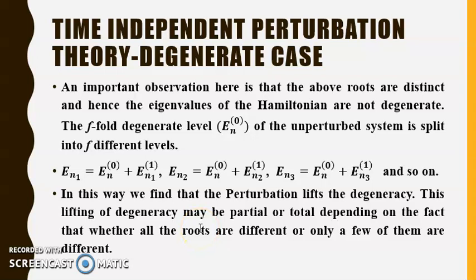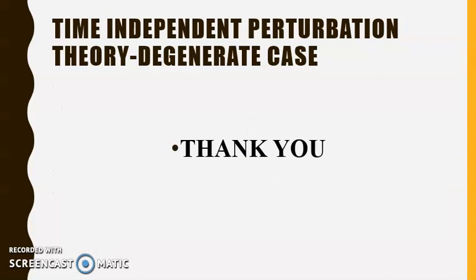This lifting of degeneracy may be partial or total depending on whether all the roots are different or only a few of them are different. To summarize, in time independent perturbation theory for degenerate cases, the perturbation lifts the degeneracy. Whether this lifting is partial or total depends on the roots obtained through the secular determinant — whether all are different or only some. With this, we conclude our discussion on time independent perturbation theory for degenerate cases. Thank you.